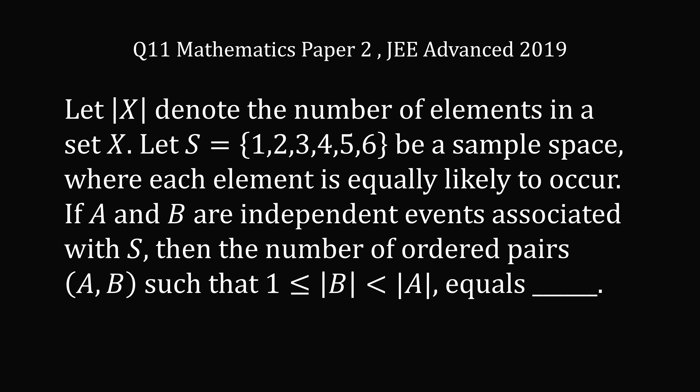So what was this notoriously difficult question? Let the cardinality of X denote the number of elements in a set X. Let S be the set {1, 2, 3, 4, 5, 6} be a sample space where each element is equally likely to occur. If A and B are independent events associated with S, then the number of ordered pairs such that 1 is less than or equal to the cardinality of B is less than the cardinality of A equals blank. You are to provide a numeric answer. I thank Gyan for the suggestion. Pause the video if you'd like to give this problem a try. When you're ready, keep watching to learn how to solve this problem.